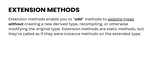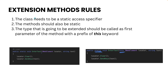Extension methods have some rules. First, the class needs to be a static access specifier — the SeleniumCustomMethods class needs to be static. Second, the methods should also be static. Third, and most importantly, the type that is going to be extended should be passed as the first parameter of the method with a prefix of the 'this' keyword. In our case we are extending IWebElement, so it must be the first parameter prefixed with 'this'.